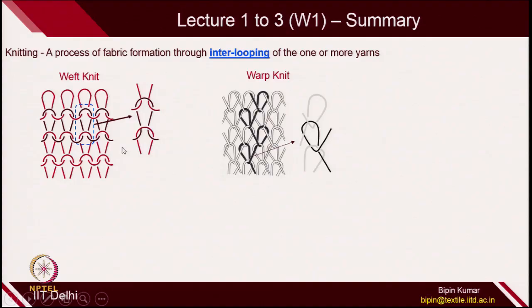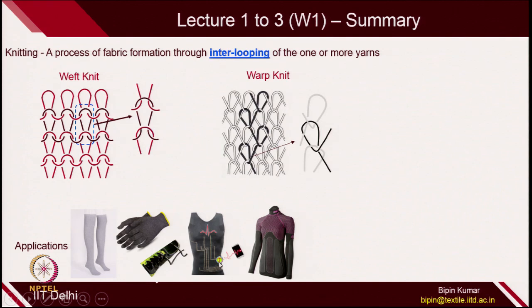Before we move, let's first revise what we covered so far in week 1. We came up with the basic definition of knitting, which is the process of inter-looping of yarns. We saw how the loop interacts inside the fabric structure, and we came across 2 categories of knitting: weft knit and warp knit. Warp knit we will cover later in this course. We also saw some of the application potential of knitting, right from hosiery and garments to high-tech applications like wearable technologies, protective gloves, agriculture, and sports.